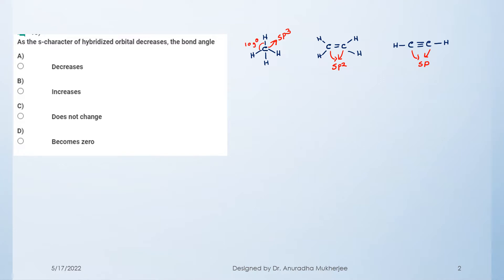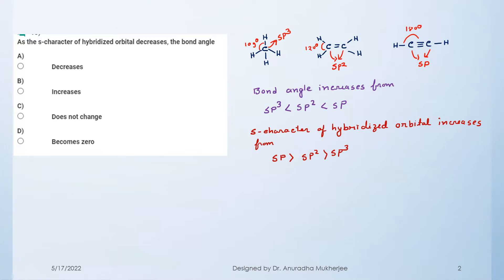When carbon is sp2 hybridized, the bond angle is 120 degrees. When it is sp hybridized, the bond angle is 180 degrees. The S character changes with hybridization: sp hybridized orbital has 50% S character, sp2 has 33.3%, and sp3 has 25%. So as the S character decreases from sp to sp2 to sp3, the bond angle also decreases.